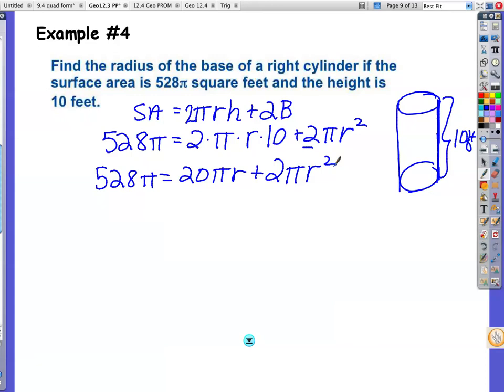Moving along. This, absolutely, I do not want you to take anything times pi, because every statement, every little piece up here has pi in it. Pi, pi, pi. Let's get rid of it. As long as you're fair, and you divide every piece by pi, you're allowed to do that. So 528 is actually equal to 20R plus 2R squared.